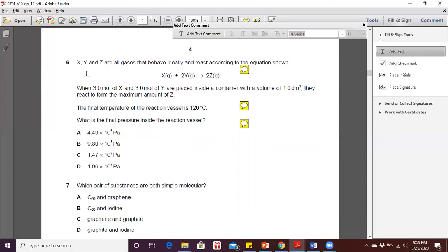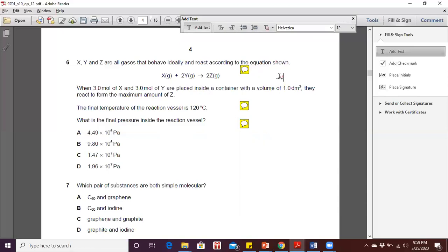X, Y, and Z are all gases that behave ideally and react according to the equation shown. So one mole of X would react with two moles of Y and produce two moles of Z. When three moles of X and three moles of Y are placed inside a container with a volume of 1.0 decimetre cube, now allow me to label volume as V, they react to form the maximum amount of Z. The final temperature of the reaction vessel is 120 Celsius.